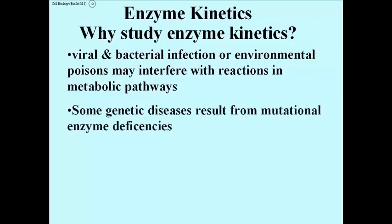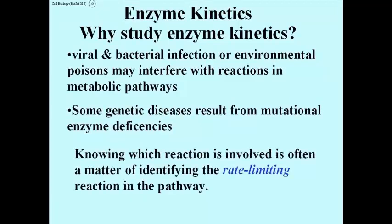Some genetic diseases result from mutations in the genes for enzymes that cause an immediate enzymatic problem. So knowing which reaction is involved is often a matter of identifying what is called the rate limiting reaction in a pathway, the slowest reaction in a pathway.